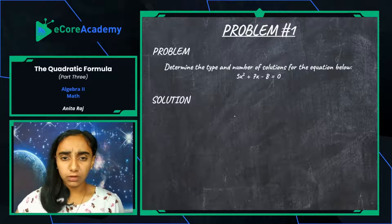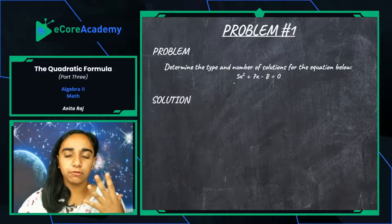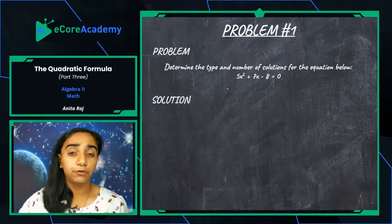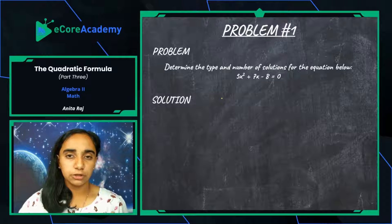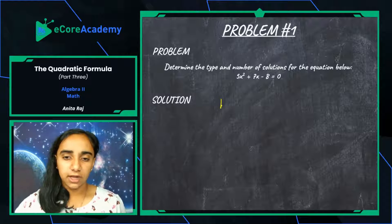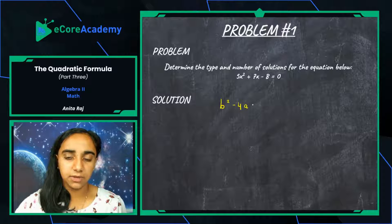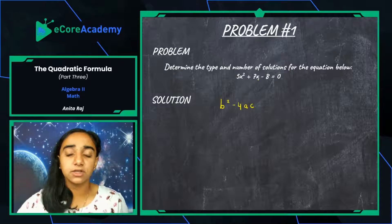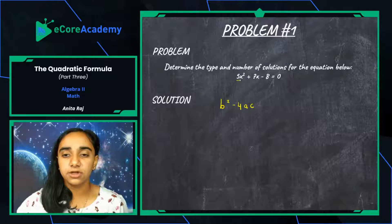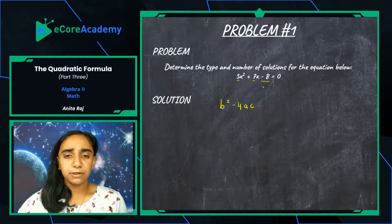The first step is always writing down the formula. The discriminant formula is b squared minus 4ac. We take the a, b, and c values from standard form. The quadratic equation is already in standard form: five is our a value, seven is our b value, and negative eight is our c value. We're simply plugging these values in for a, b, and c in the discriminant formula.